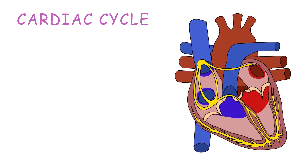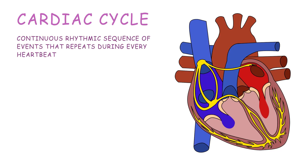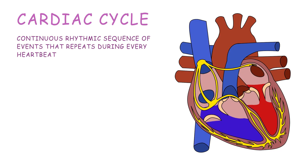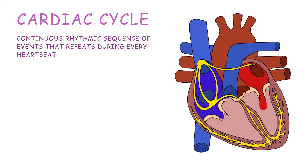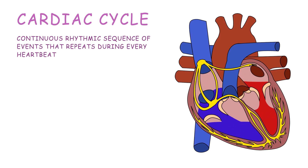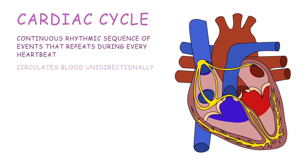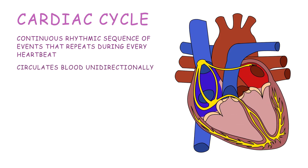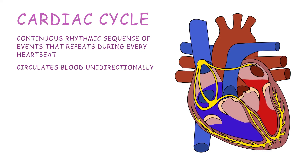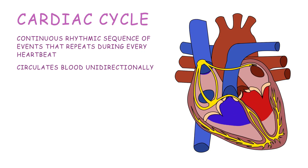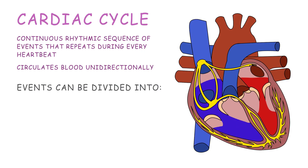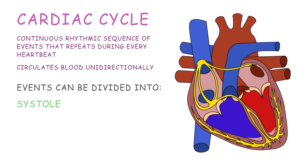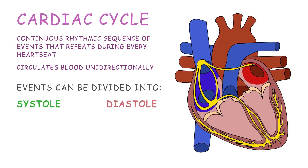The cardiac cycle is the continuous, rhythmic sequence of events that repeats during every heartbeat, allowing the heart to efficiently circulate blood unidirectionally throughout the body. Cardiac cycle events can be divided into systole and diastole.